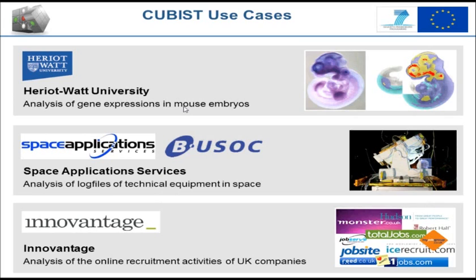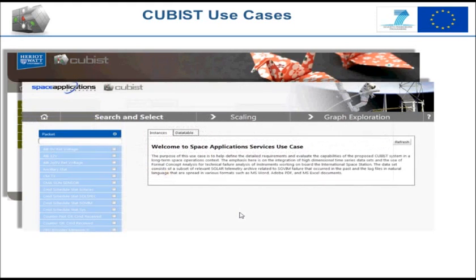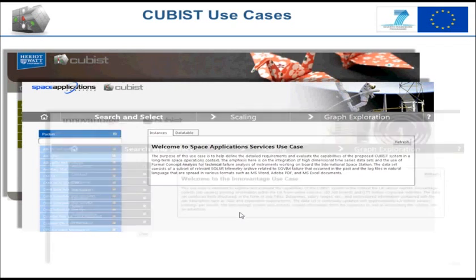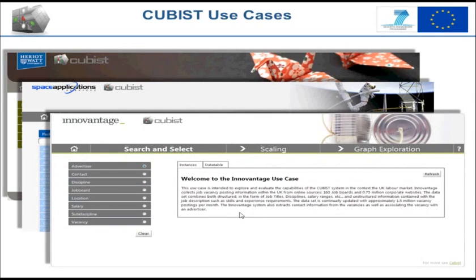Three partners in the Qubist consortium are use case partners and they provide quite different use cases which showcase the prototype. The Heriot-Watt University use case deals with biological data and focuses on the analysis of gene expression in mouse embryos. The Space Application Services use case focuses on the analysis of log files of technical equipment in space, for example on satellites. Finally, in the Advantage use case, analysis of the online recruitment activities of UK companies is conducted. For each of these use cases, the prototype has been customized, and we will use all three to show the capabilities of the prototype.